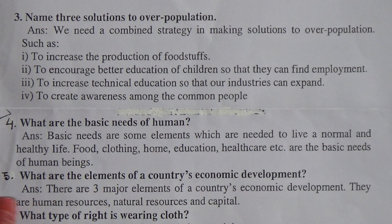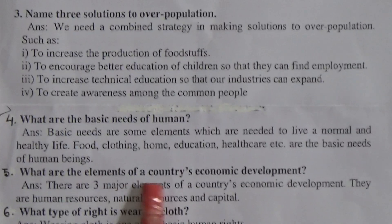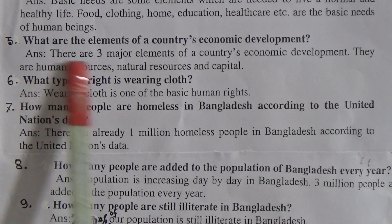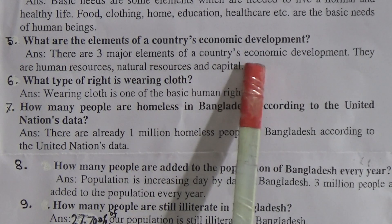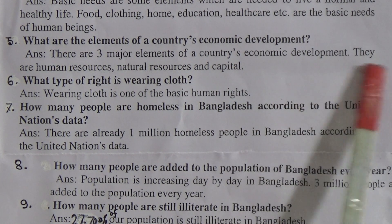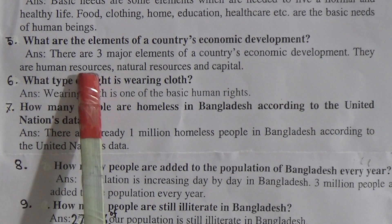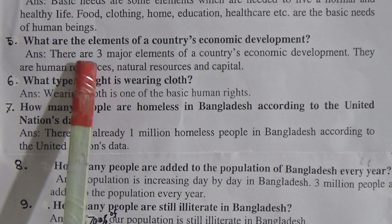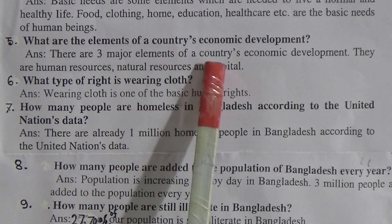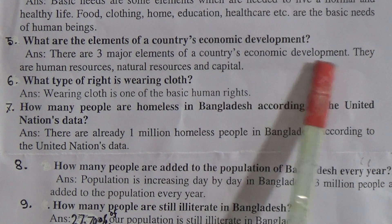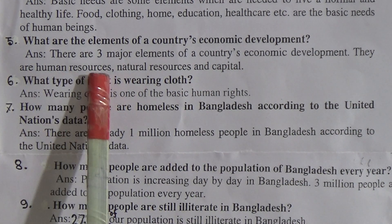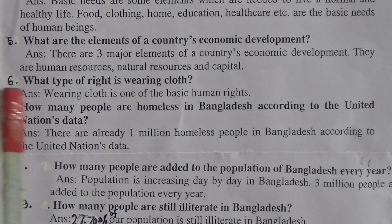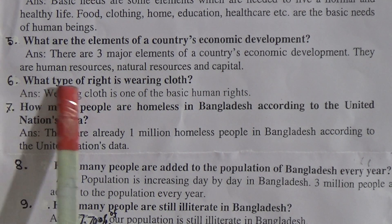Question Number Five: What are the three elements of a country's economic development? Answer: There are three major elements of a country's economic development. They are human resources, natural resources, and capital.